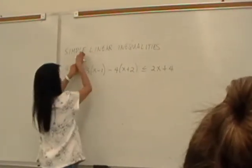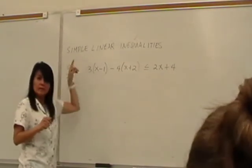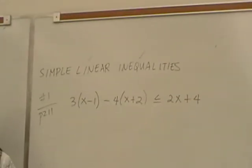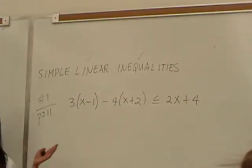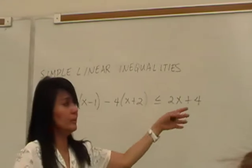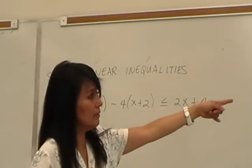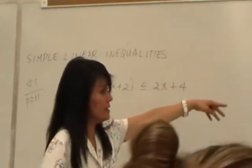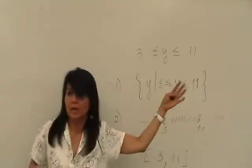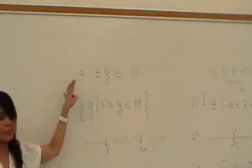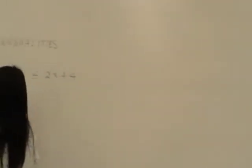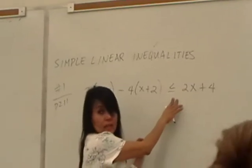Why is it 'simple'? Later on we're going to talk about compound. What is the difference between simple and compound? Simple has only one inequality symbol. When we were doing the notations earlier, those answers with two inequality symbols are actually answers to compound inequalities. But this is simple because you see only one inequality symbol.